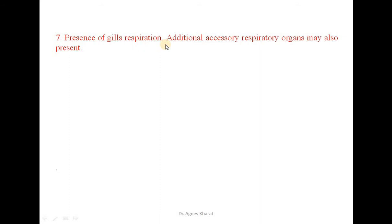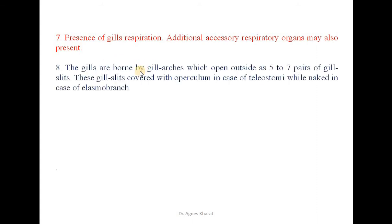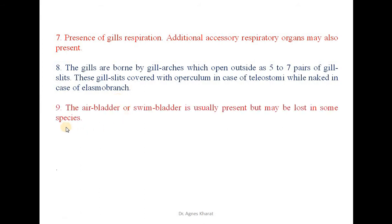There is presence of gills for respiration; additional accessory respiratory organs may also be present. The gills are borne by gill arches which open outside as 5 to 7 pairs of gill slits. The gill slits are covered with an operculum in case of teleostomes, while they are naked in case of elasmobranchs. The air bladder or swim bladder is usually present but may be lost in some species.